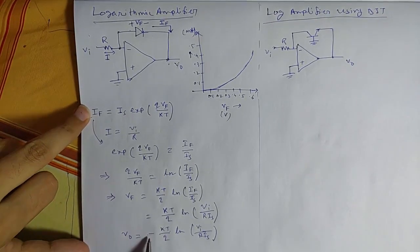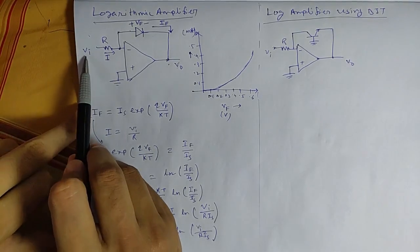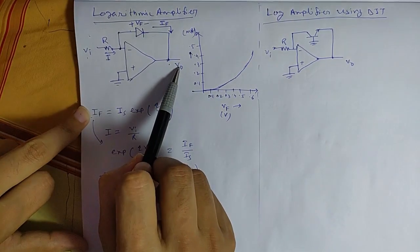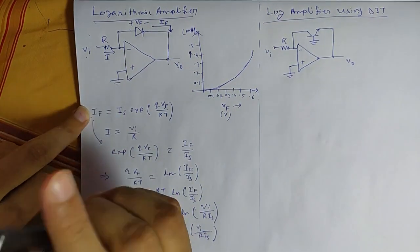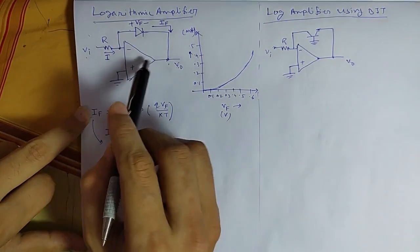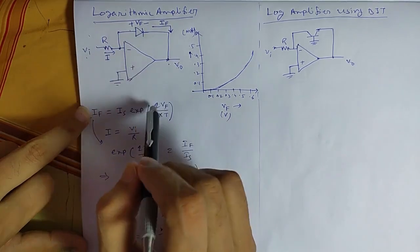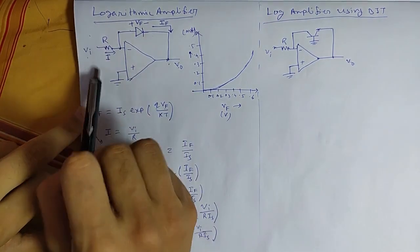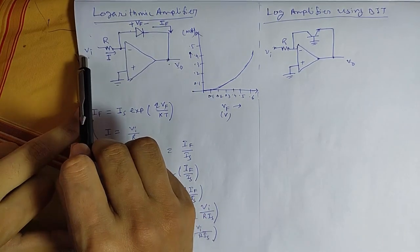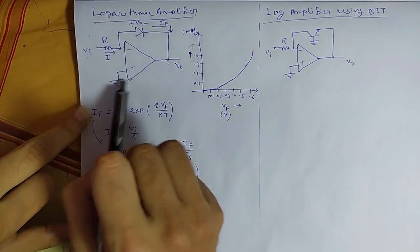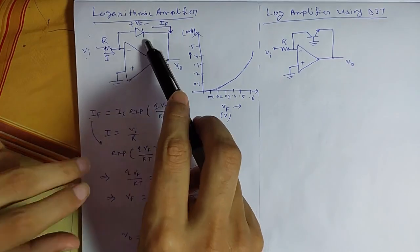The diode will follow these characteristics, but if this input is negative, the diode will be in cutoff and there will be no output. So this circuit is only valid for positive input. This circuit will not be valid for negative input. For negative input, you need to reverse the diode and you can get the output as positive.